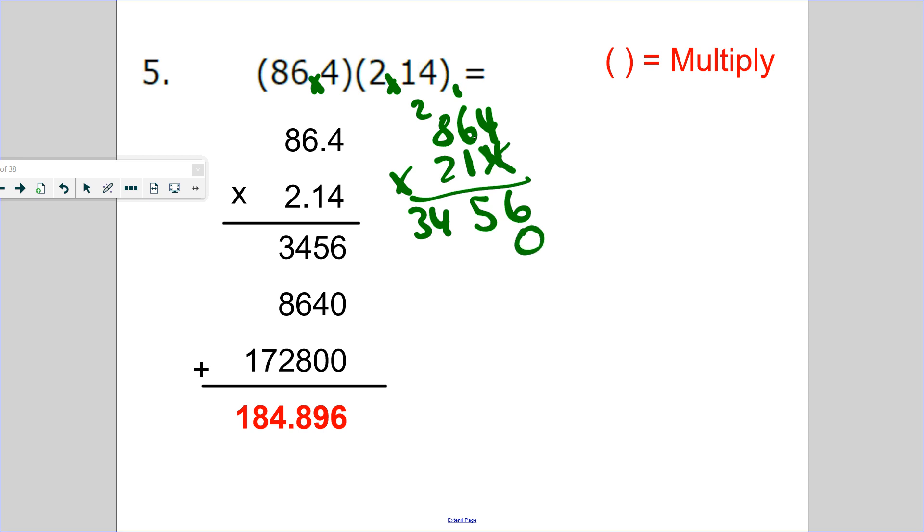We're done with the 1. 1 times 4 is 4, 1 times 6 is 6, 1 times 8 is 8. Then 2 times 4 is 8, 2 times 6 is 12, carry the 1. 2 times 8 is 16, plus 1 is 17. If you add all of these numbers up, 6 plus 4 is 10.